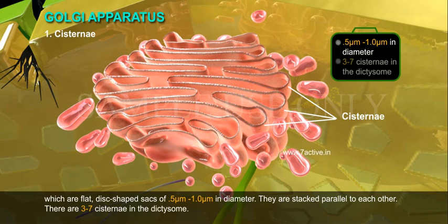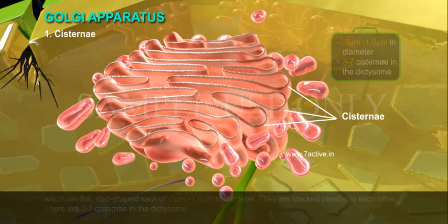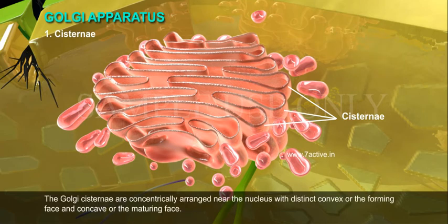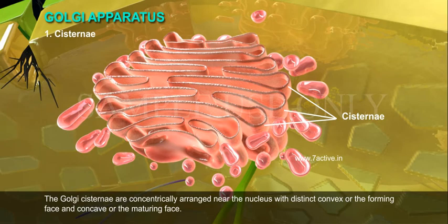There are 3 to 7 cisternae in the dictyosome. The Golgi cisternae are concentrically arranged near the nucleus with a distinct convex or forming face and a concave or maturing face.